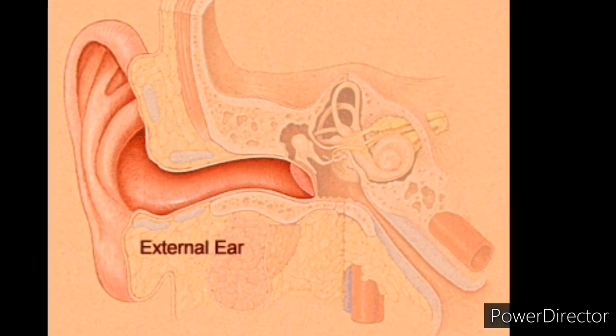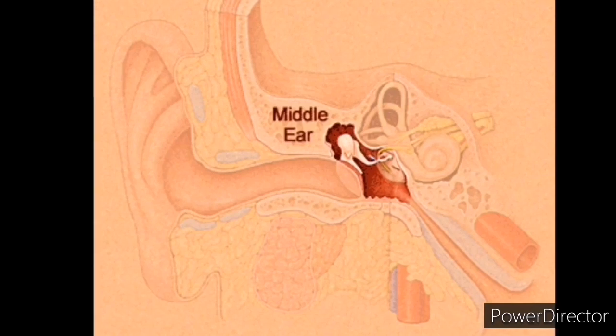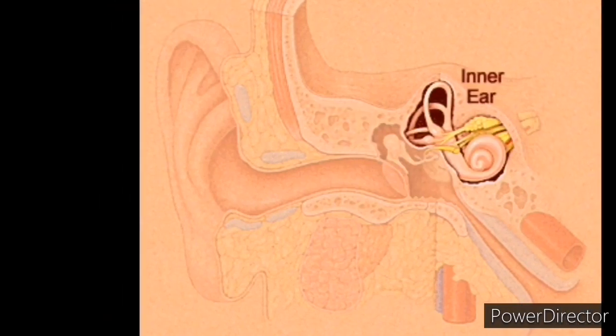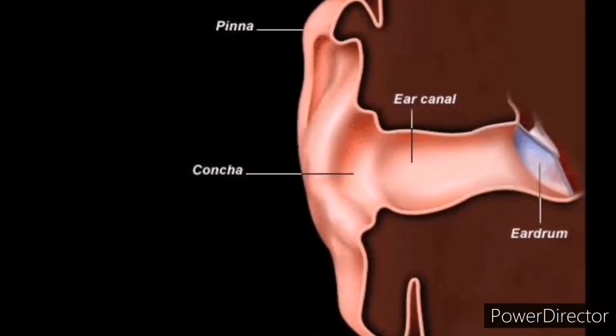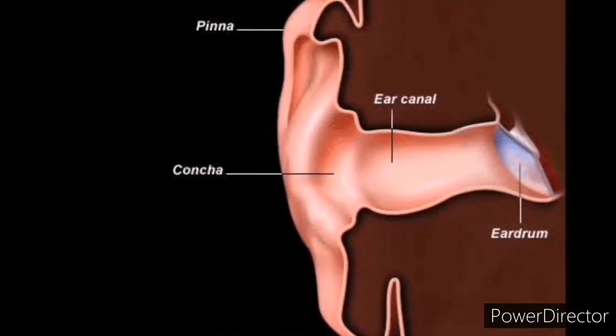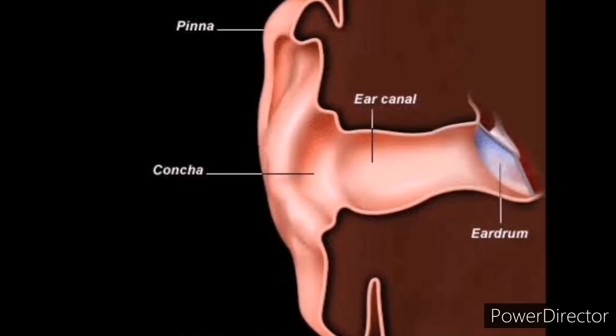The outer ear is the external part of the ear which collects sound waves and directs them into the ear. The pinna is the only visible part of the ear with its special helical shape. It is the first part of the ear that reacts with sound.